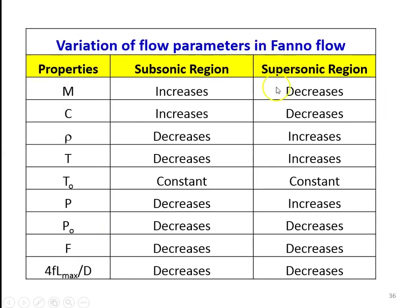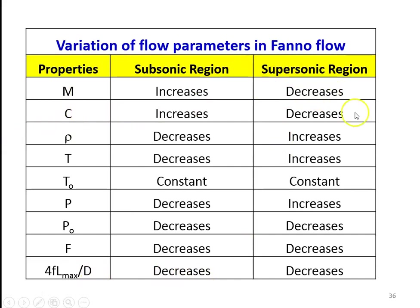This is a comparison table for various flow regions showing the variation of properties. For the supersonic region: Mach number increases, velocity increases, density decreases, temperature decreases, stagnation temperature is constant, pressure decreases, stagnation pressure decreases, impulse function decreases, and 4FL_max/D also decreases.